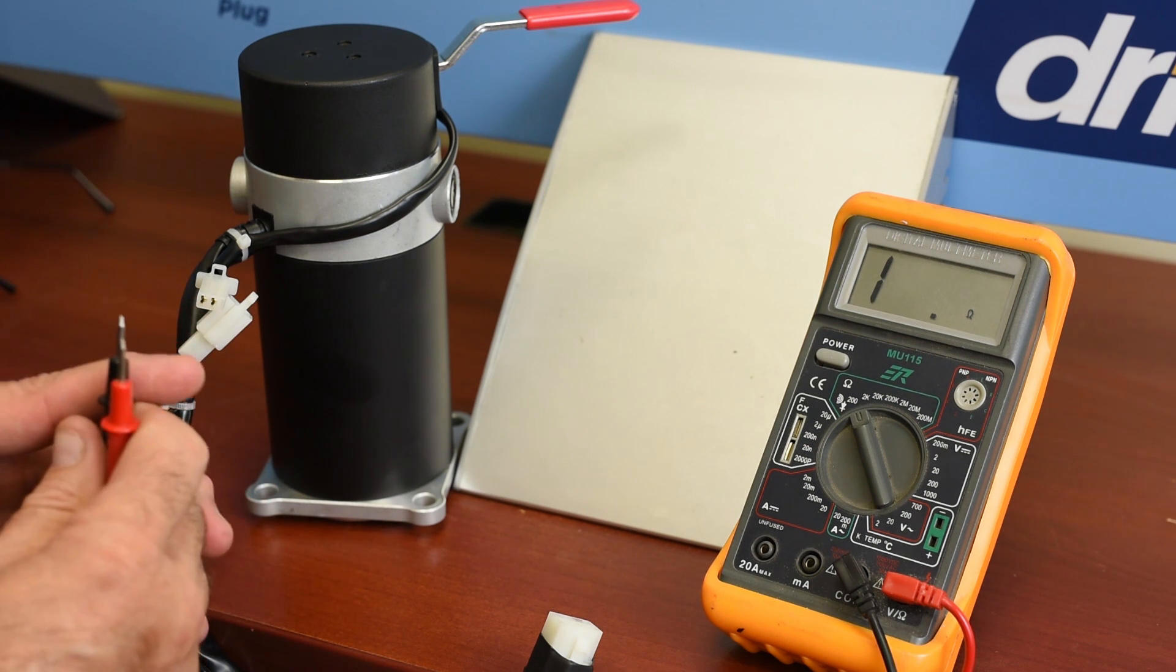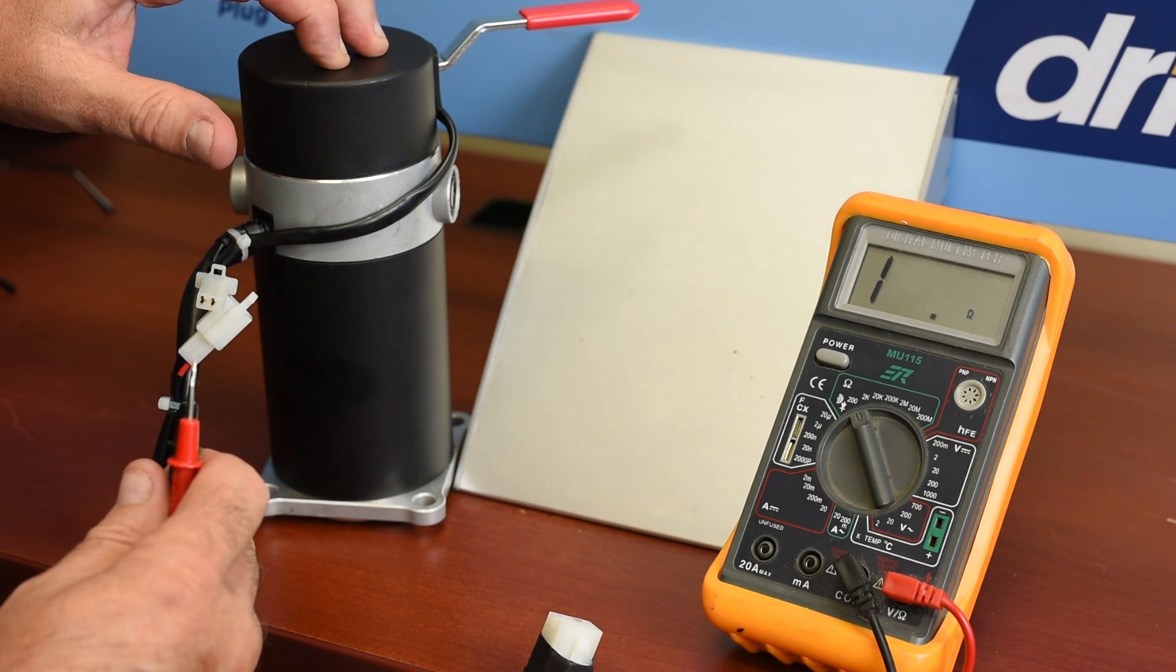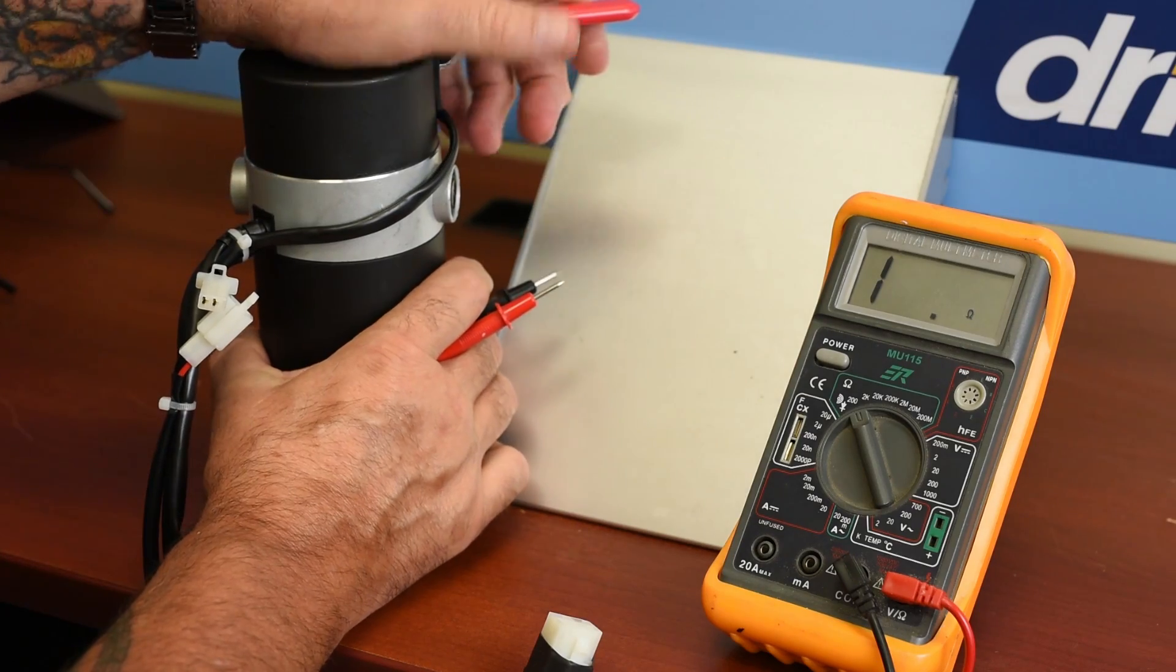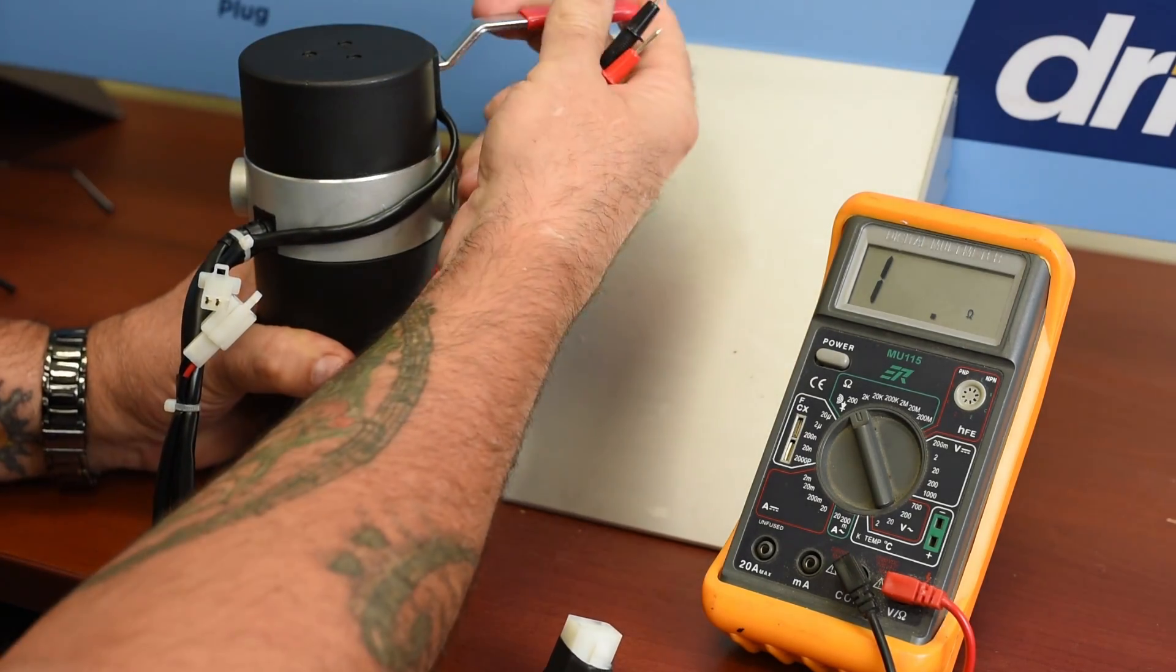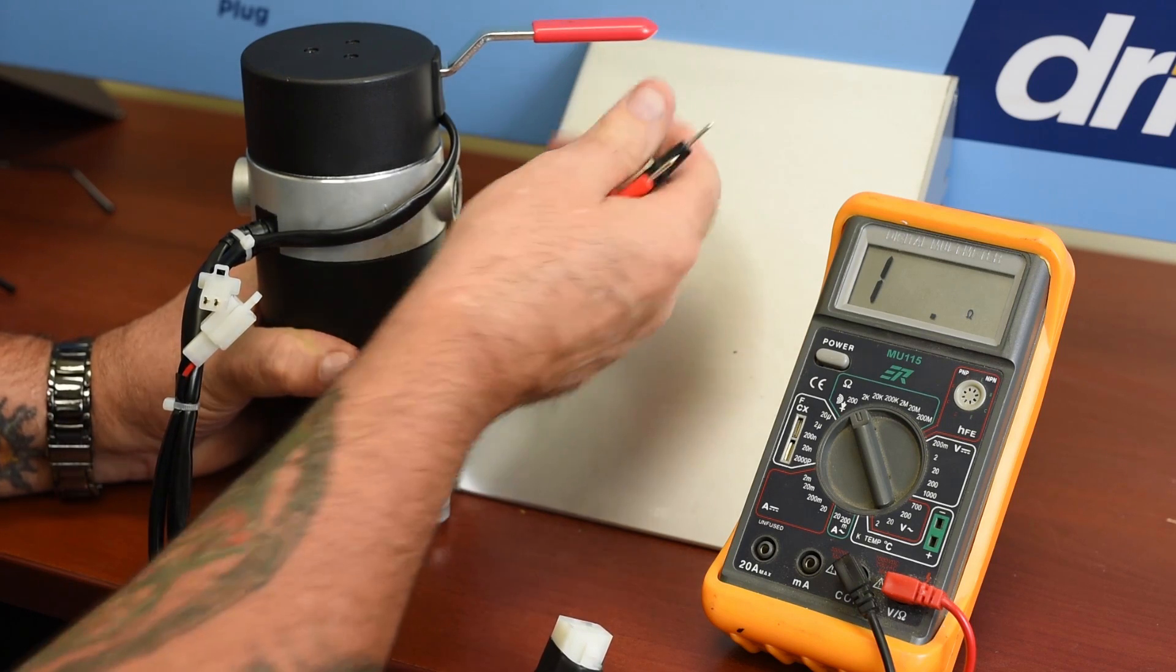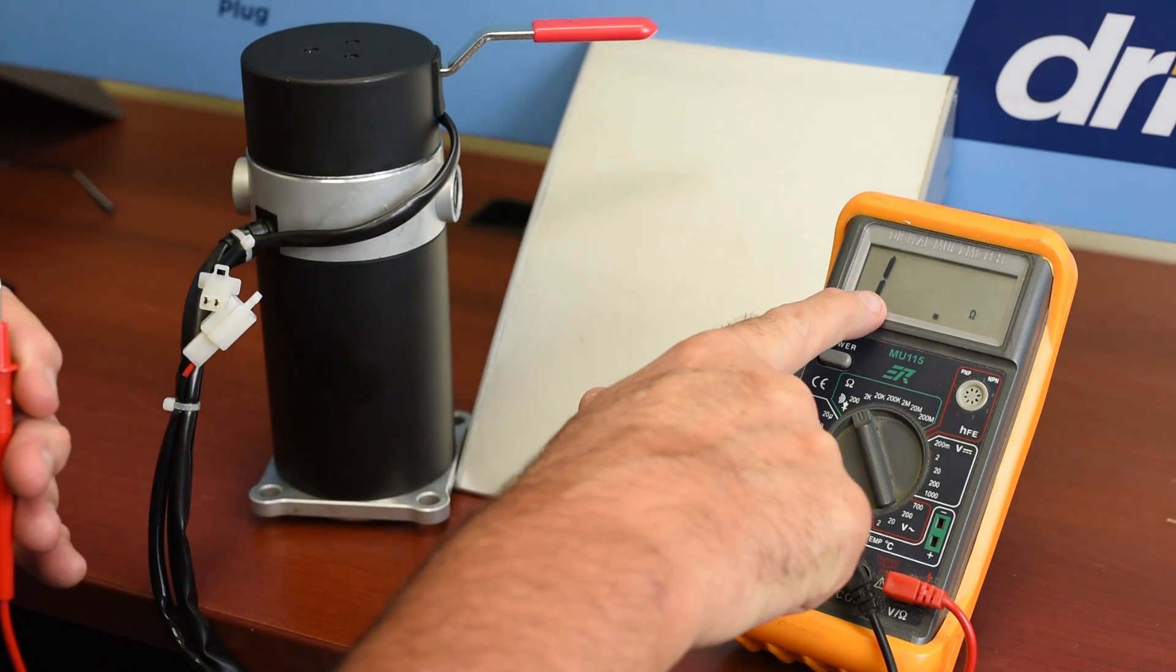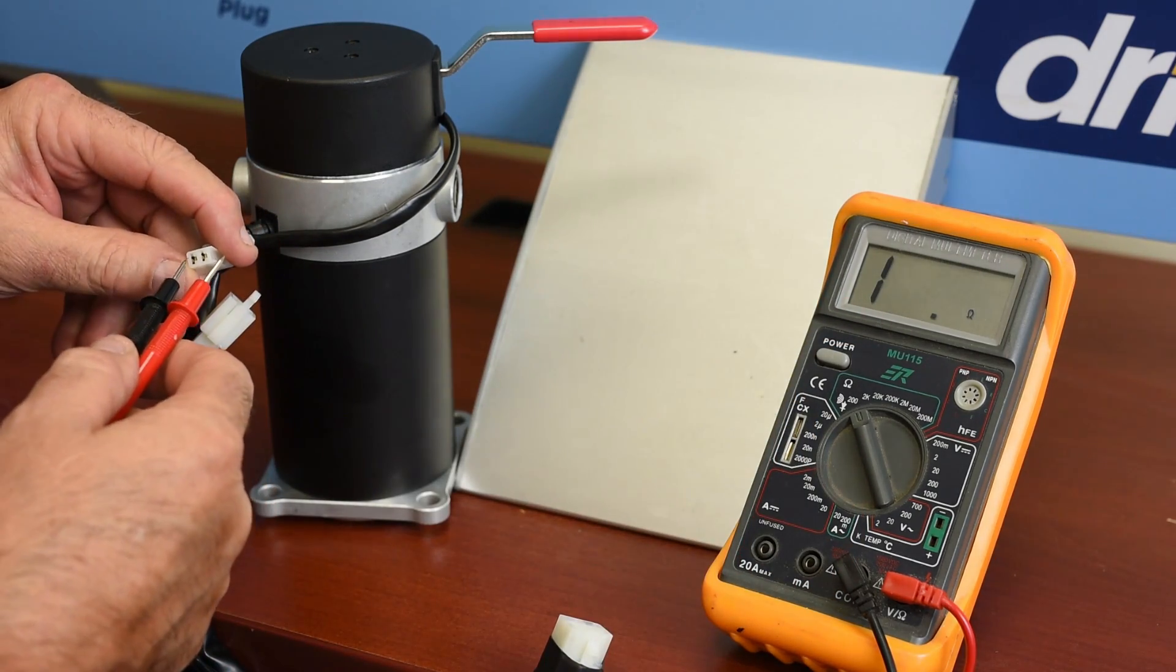The next part we're going to test is the microswitch. We'll energize the manual override and put it in freewheel mode. Now we'll test and we should be reading infinity because we should have an open circuit.